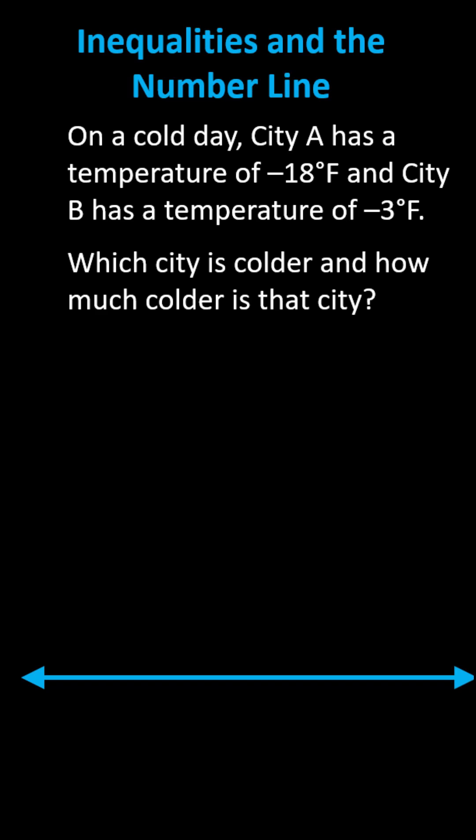On a cold day, city A has a temperature of negative 18 degrees Fahrenheit, and city B has a temperature of negative three degrees Fahrenheit. Which city is colder, and how much colder is that city?